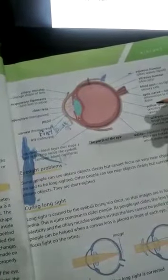These are the ciliary muscles. As age increases, these ciliary muscles become weak, which is why the lens cannot focus properly.